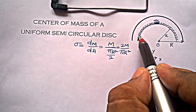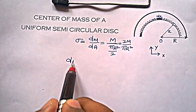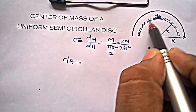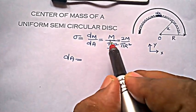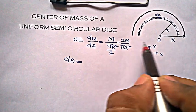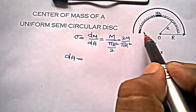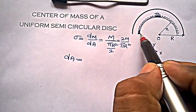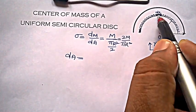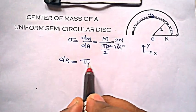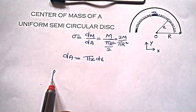Now dA is the area of the elemental strip or ring I have chosen. The width dx is a very small width of this strip. If you pull the strip out and stretch it, it would look like a rectangle of length π times x, because the circumference of a semicircle is πr, and since x is the radius here, the length of the strip is πx and the height is dx. So the area dA will be πx dx.